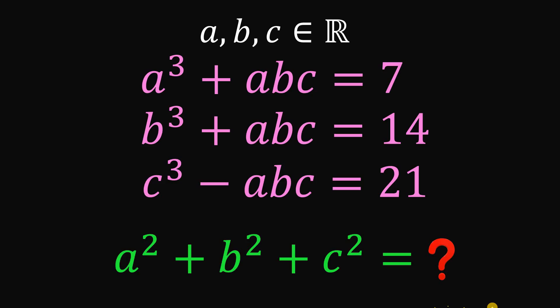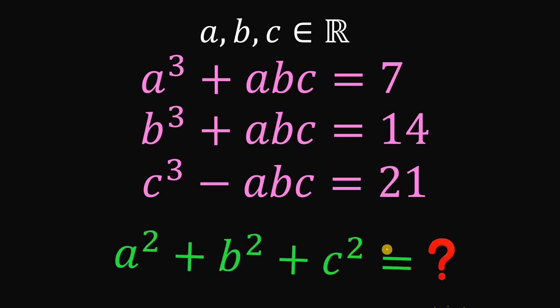Today, we will answer a math challenge given by one of our followers. The question goes like this: given these equations — a cubed plus abc equals 7, b cubed plus abc equals 14, and c cubed minus abc equals 21 — wherein a, b, and c are all real numbers, then the goal is to evaluate the expression a squared plus b squared plus c squared.